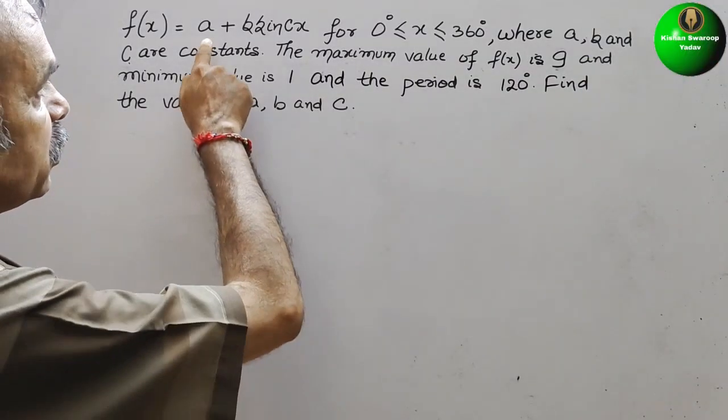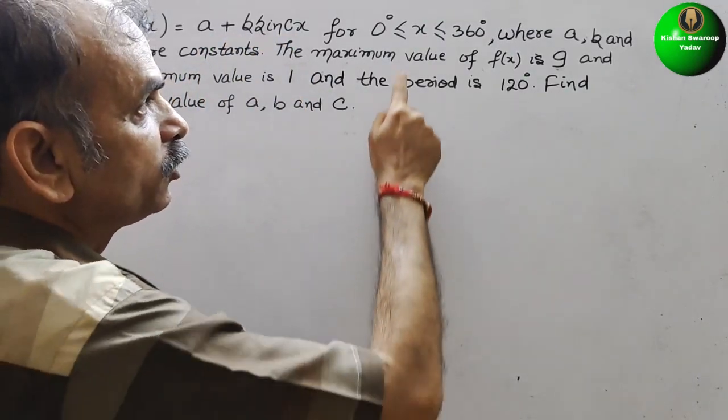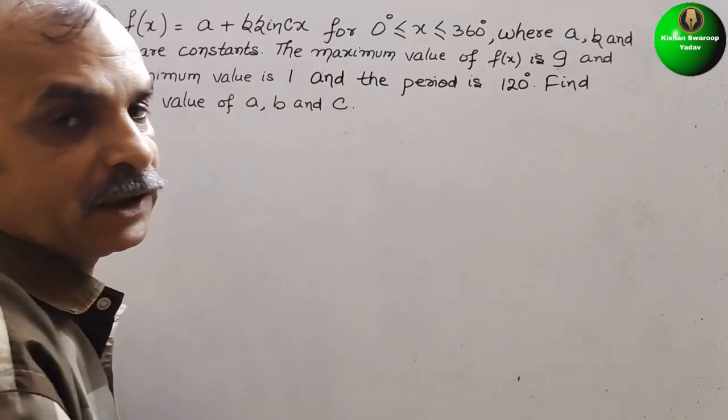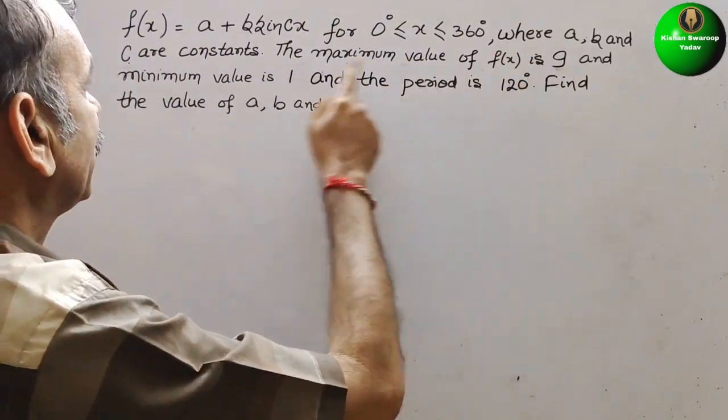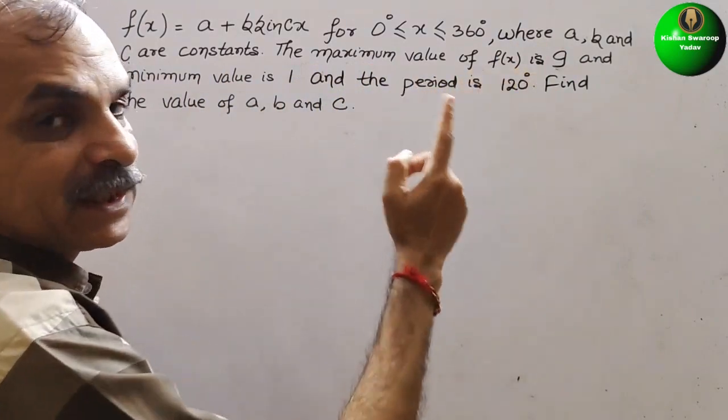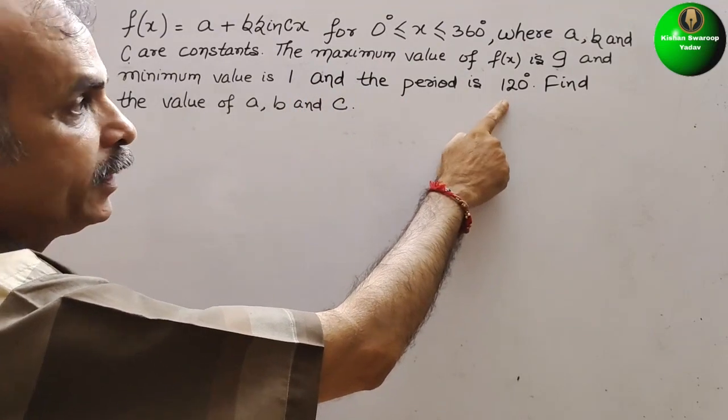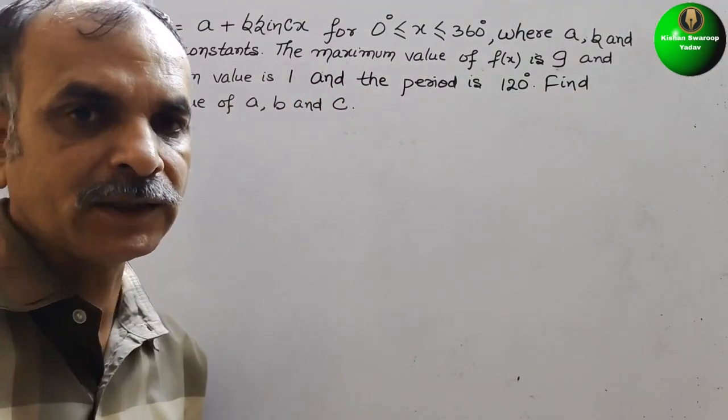Your question is f(x) is equal to a plus b sin(cx) for 0 degree less than or equal to x less than or equal to 360 degrees, where a, b and c are constants. The maximum value of f(x) is 9 and the minimum value is 1 and the period is 120 degrees. Find the value of a, b and c.